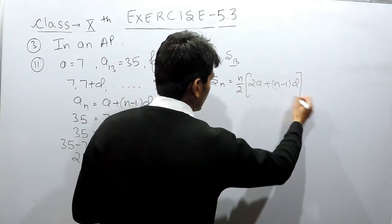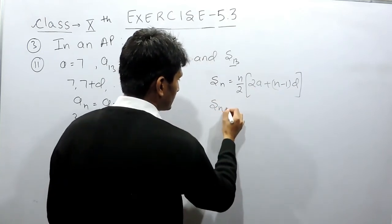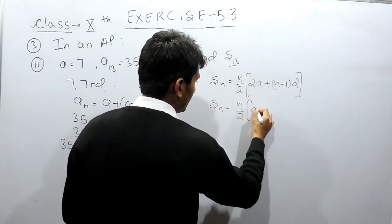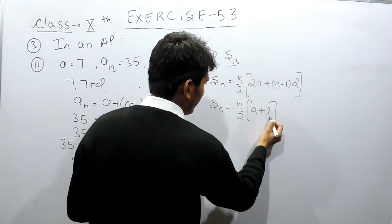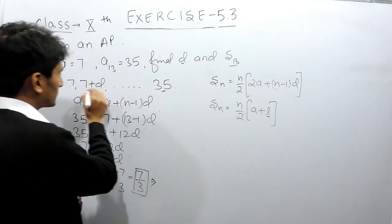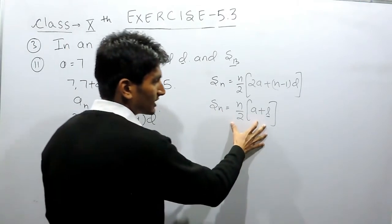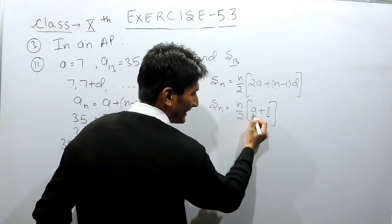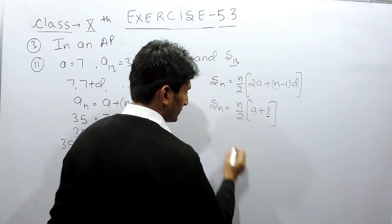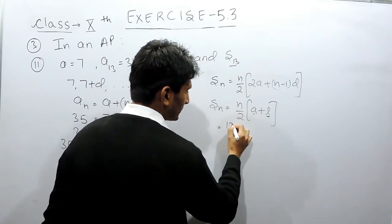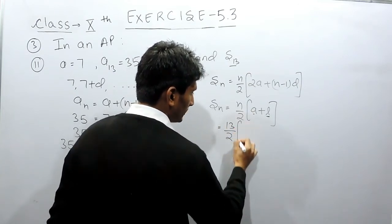There is another formula which says the sum equals n by 2 times (a plus L), where the first and the last term is given to you. You can use this formula also, where a is the first term and L is the last term.